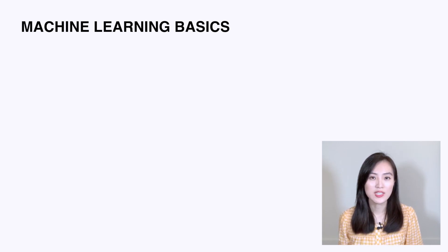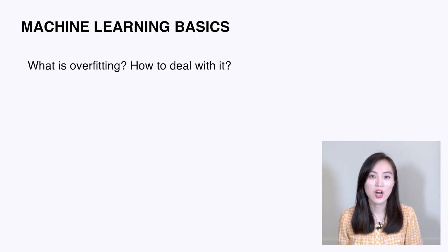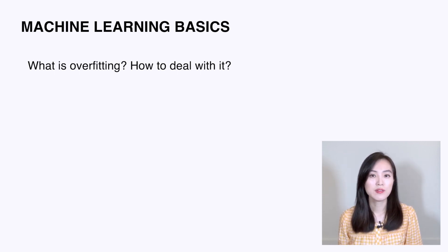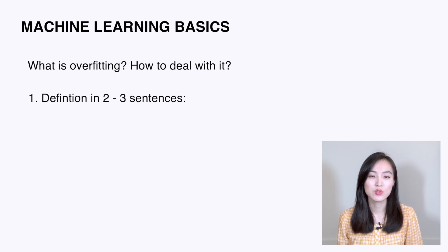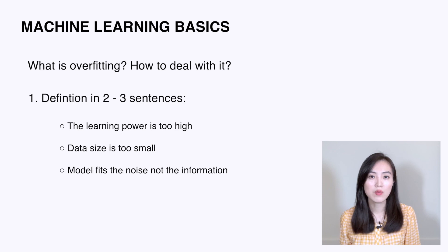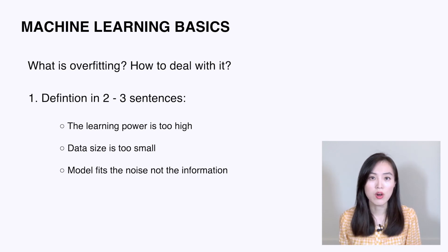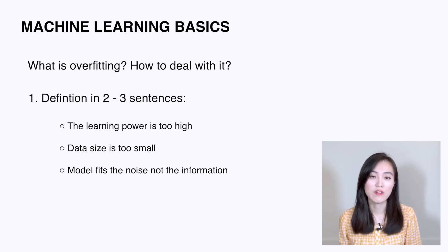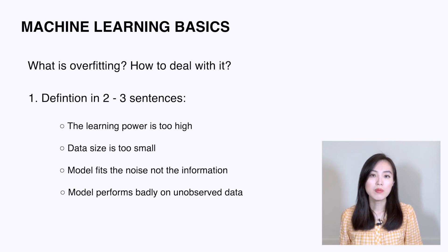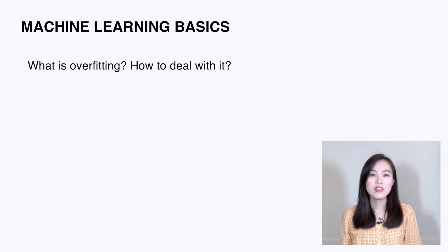For example, one of the most commonly asked questions is: what is overfitting and how do you deal with it? To answer, first briefly go through the definition in two to three sentences. Overfitting happens when the learning power of a model is too high or the data size is too small — the model ends up fitting the noise rather than the useful information, so it performs badly on unobserved data.